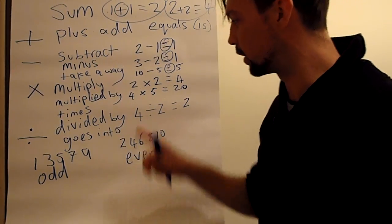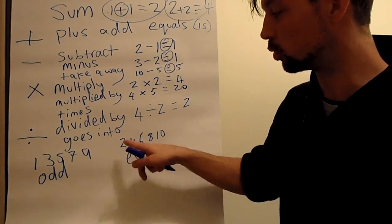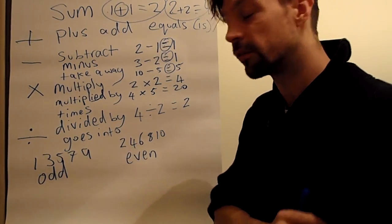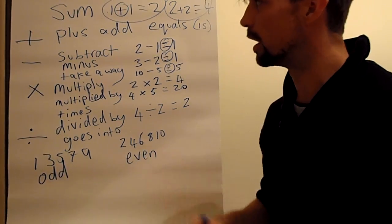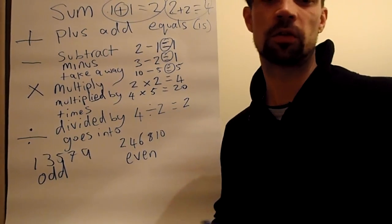Odd means you can't divide by 2. And 2, 4, 6, 8, 10 - you can divide by 2. These are odd numbers and even numbers.